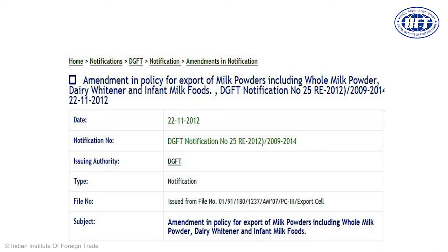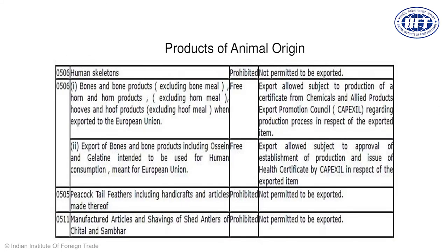This is how a typical DGFT notification looks — the DGFT keeps making policy changes, so as a startup you should monitor the DGFT website and understand the exact 6-digit status of your products. For example, HS code 0506 covers bone and bone products, horn and hoof products — when exported to the EU, these are free. But peacock feathers, including handicraft products, are prohibited. Both come from animal origin, but peacock tail feathers or antlers of deer — cheetal and samur — are prohibited. So when picking a product for exports, be very clear about the exact status.